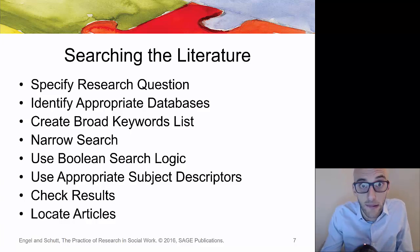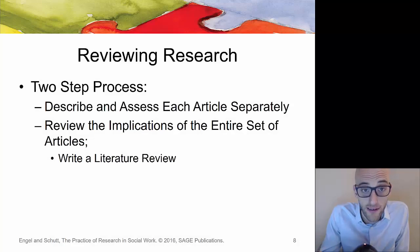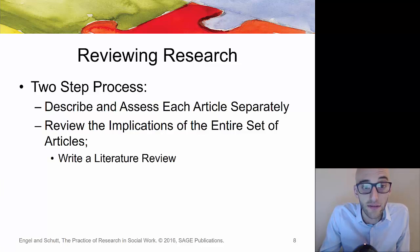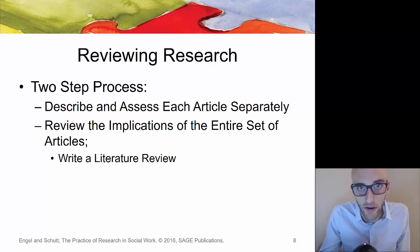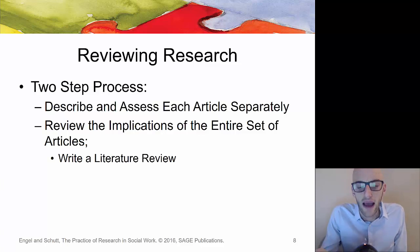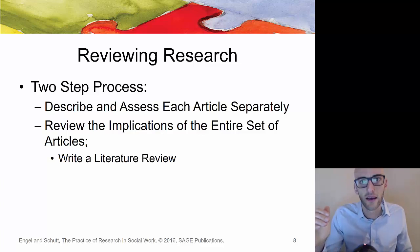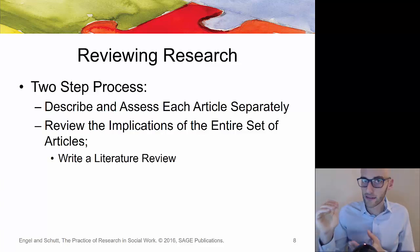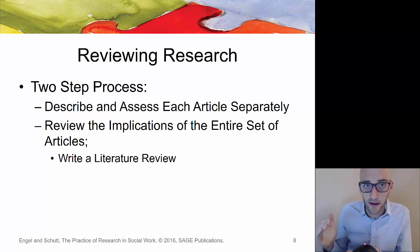That library access is another great resource to all UWM students that I still take advantage of. When writing up a literature review, you want to describe and assess each article separately, then review the implications of the entire set of articles together. There will be example papers online showing how to do this — after searching and compiling a list of papers and research articles, you'll want to look at them as a whole body while also describing them individually and how they relate, compare, and contrast.